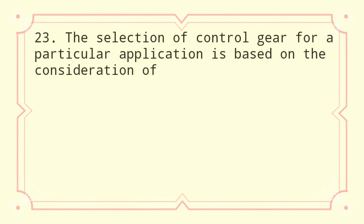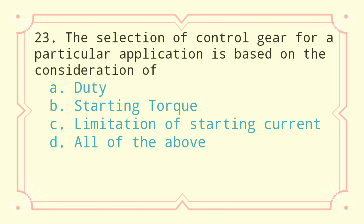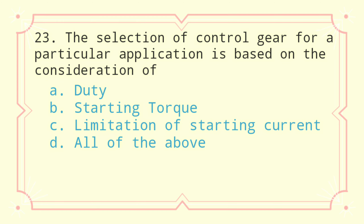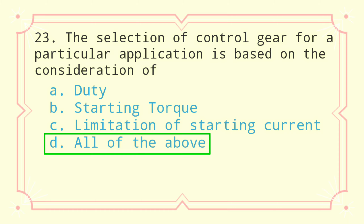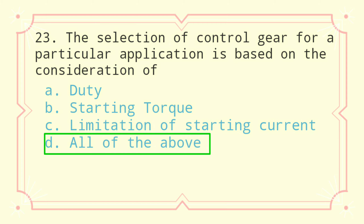Question 23: The selection of control gear for a particular application is based on the consideration of: a) duty, b) starting torque, c) limitation of starting current, d) all of the above. The correct answer is all of the above.